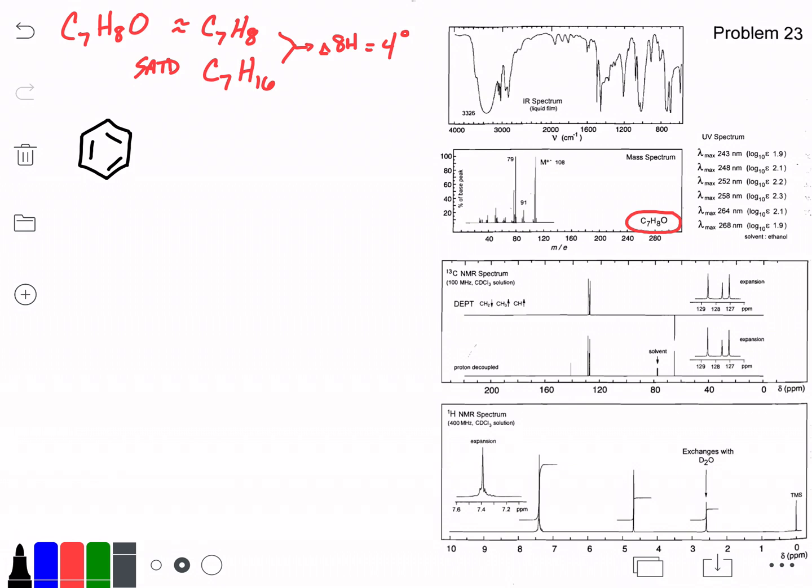We'll start there. That takes care of six of our carbons. We know we have one more carbon someplace, so I might as well draw that carbon coming off the ring. And I have an oxygen to deal with, so we'll look at the IR spectrum. Probably, since we don't have any additional degrees of unsaturation, if our aromatic ring is correct, we can't have an aldehyde or a ketone, so we're looking at either an alcohol or an ether.